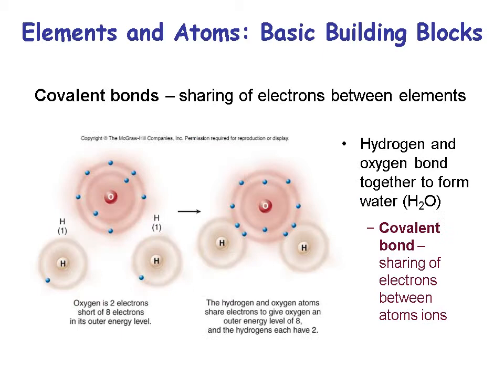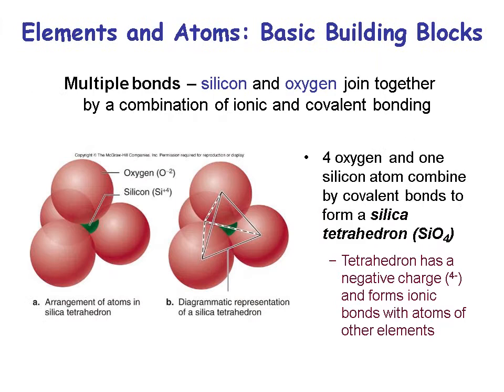An example of a covalent bond is water, where you're sharing electrons between the oxygen and hydrogen atoms — a cloud of shared electrons between the three atoms. Silicon and oxygen combine to form silica through a combination of ionic and covalent bonding. Silica forms shapes that are tetrahedral — four oxygens surround the smaller silicon atom inside that tetrahedron.